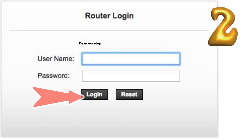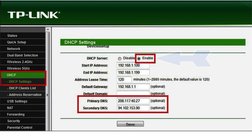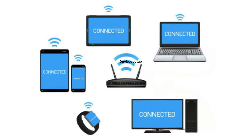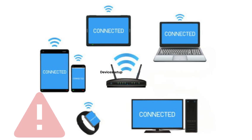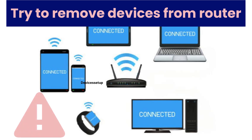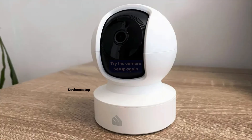Secondly, login into your router and check that DHCP is enabled — if not, kindly enable it. Thirdly, if too many devices are connected to the router, that can also cause this issue.